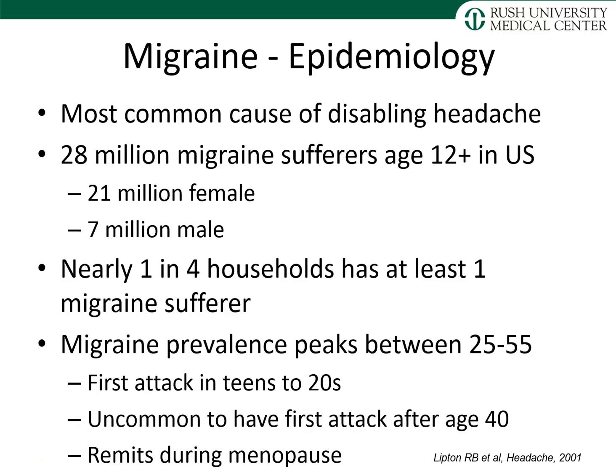Migraine is the most common cause of disabling headache among primary headache disorders. Approximately 28 million migraine sufferers are in the U.S., mostly women. Nearly one in four households has at least one migraine sufferer, and prevalence peaks between 25 and 55 years. The first attack tends to occur in the teens or 20s, and it is uncommon to have a first attack after age 40 — if so, look for secondary causes. Migraine typically remits or improves dramatically during menopause.